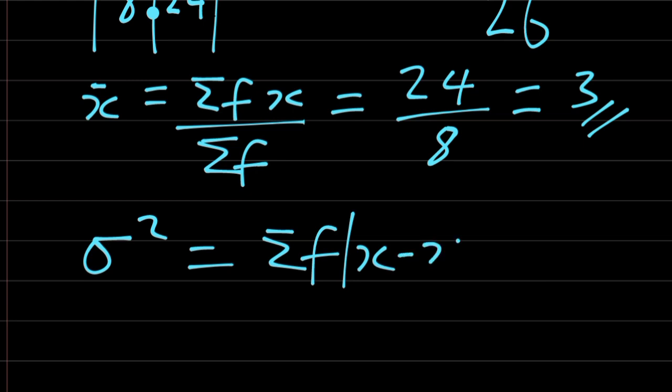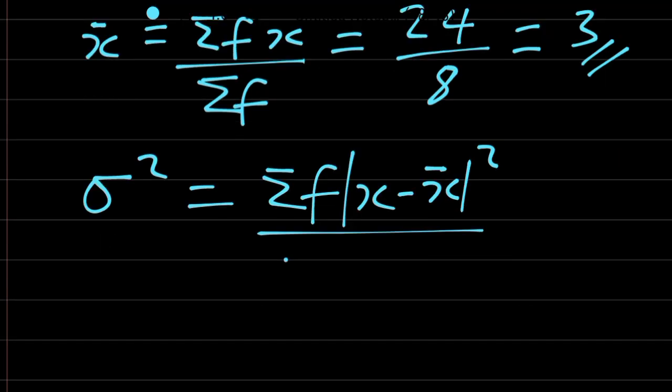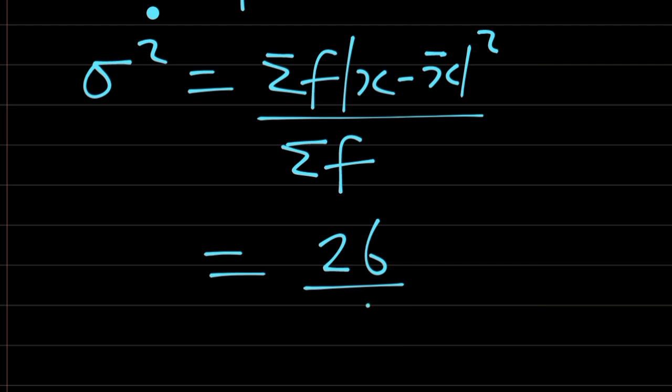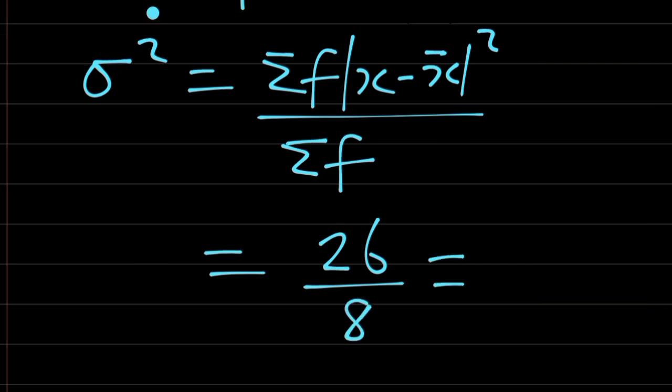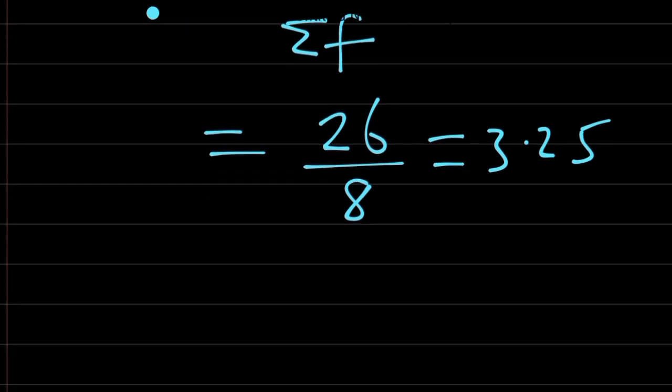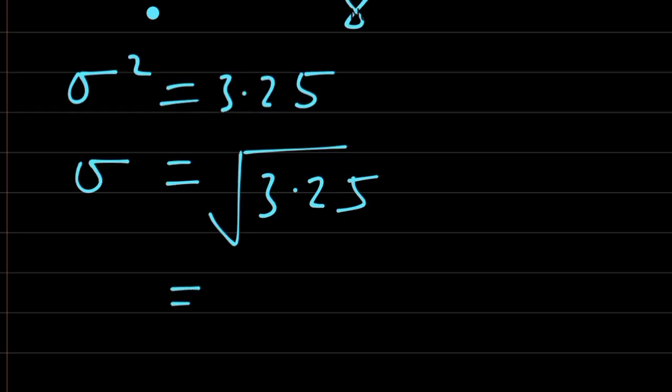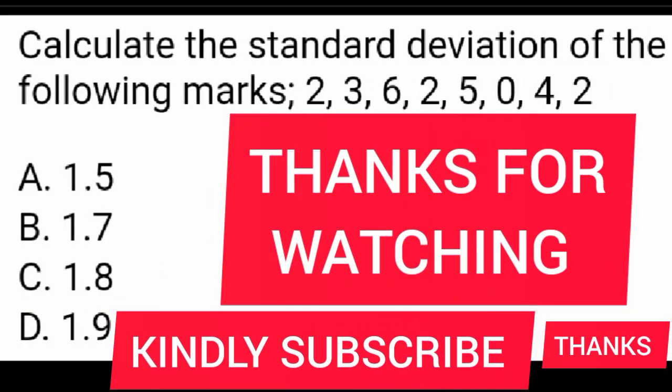Therefore our variance is equal to summation of f of x minus x bar squared over summation of f, which is 26 over 8. Our variance is equal to 3.25 while the standard deviation is the square root of the variance, square root of 3.25. Let's check the options. Option C is the correct answer. We have come to the end of this tutorial. Please don't forget to subscribe to this YouTube channel because more questions and answers are coming your way. Thanks and remain blessed.